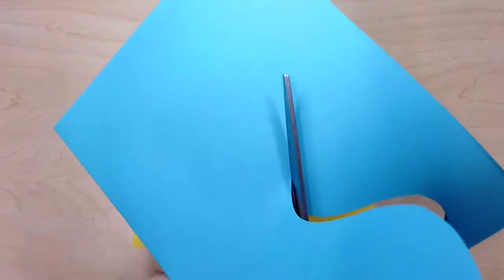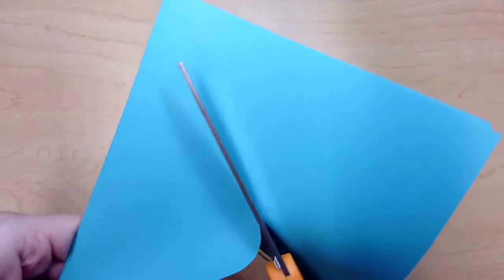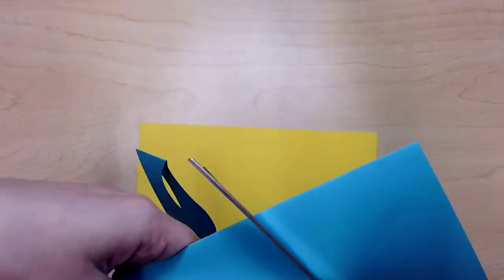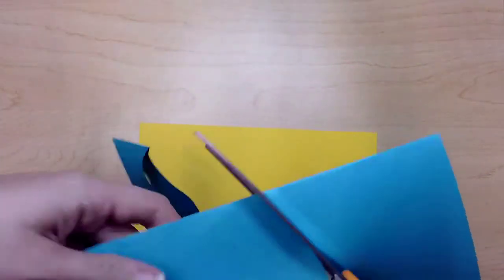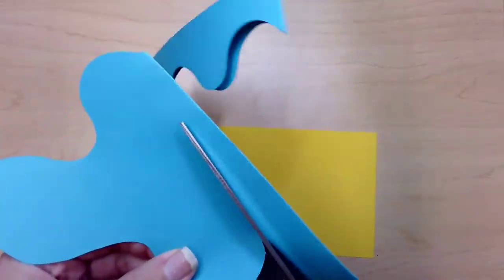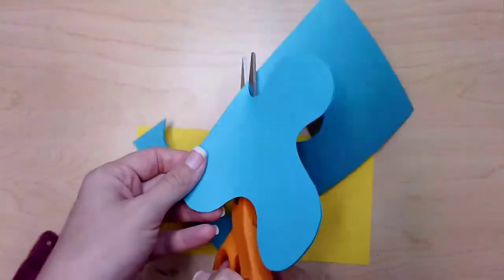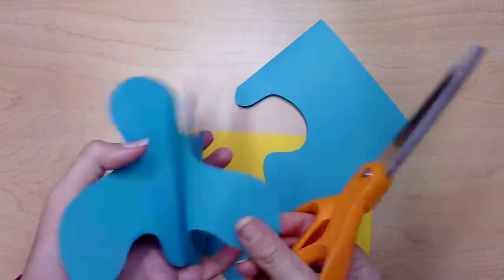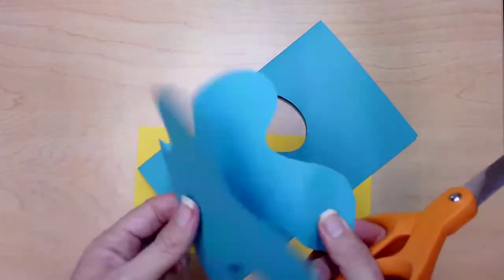I want my paper to be at the apex of the scissors a majority of the time. I move the paper to meet the scissors. I don't move the scissors to meet the paper. Now I have my little symmetrical organic shape.